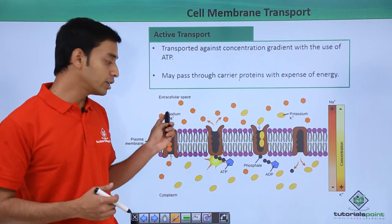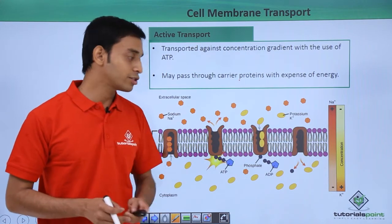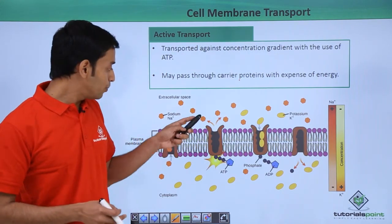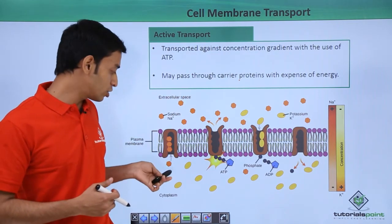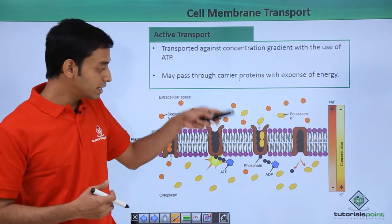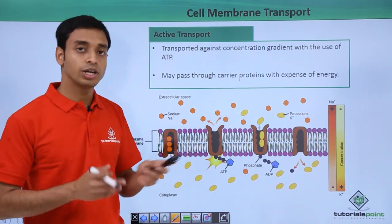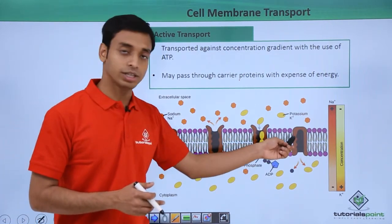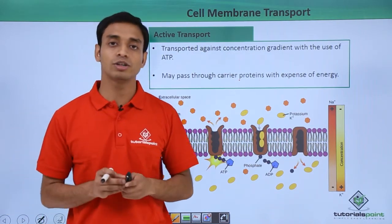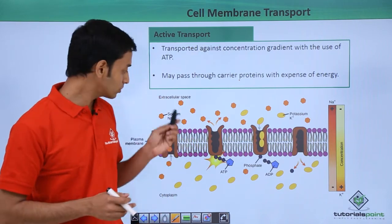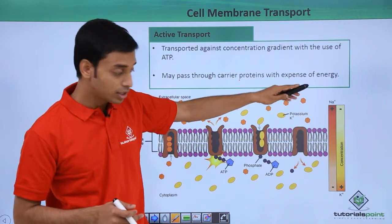To understand active transport, let us look at this example. We see two types of molecules: the red/orange ones are sodium molecules, and the yellow ones are potassium molecules. The concentration of sodium is higher on one side and lower on the other, while potassium is higher on the opposite side. These are channel proteins — sodium-potassium channels — which help in the transport of these ions.